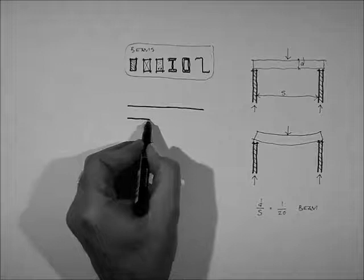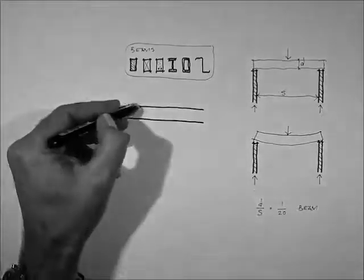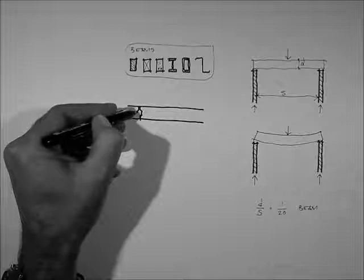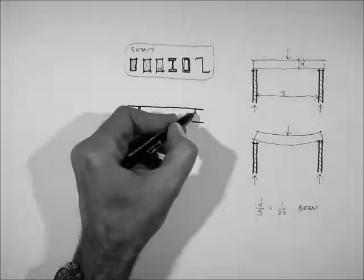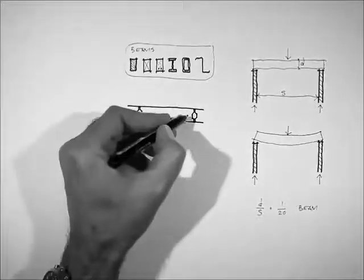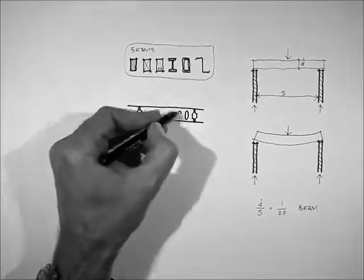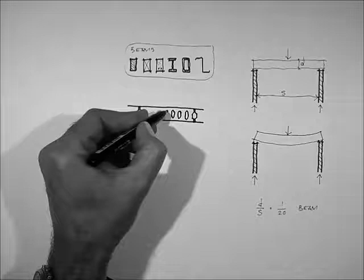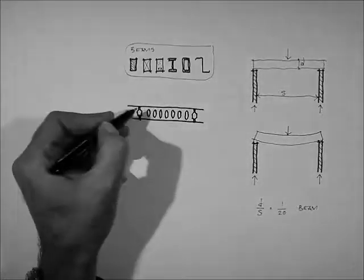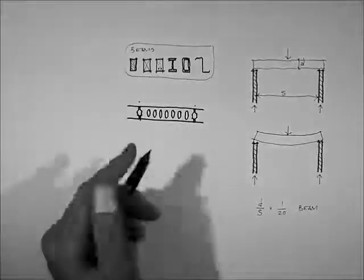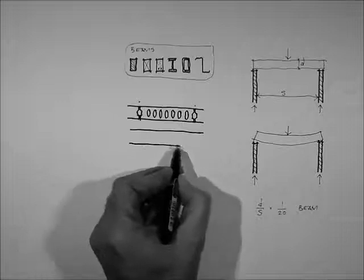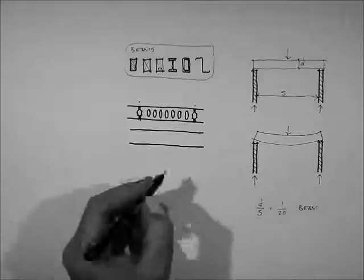Those were beams. Now I'm going to draw slab type materials. So this one is a precast concrete slab made in sections from here to here. The slab could be concrete.